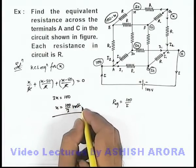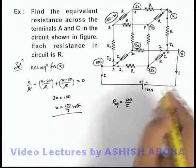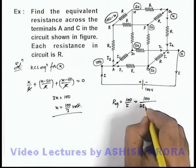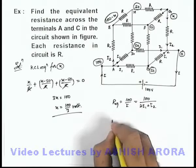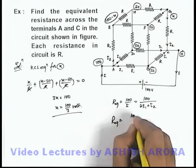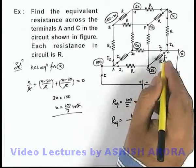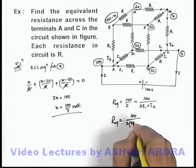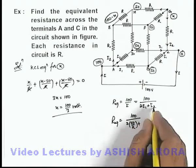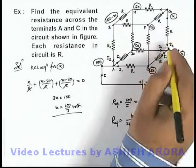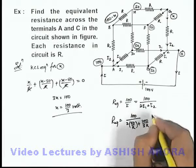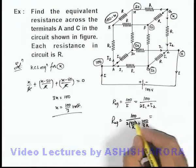Now as we have got the value of x, we can directly find out the total current as 100 divided by total current will be 2 i1 plus i2. And in this situation, here i1 we can write as 50 minus zero by R, so it'll be 2 into 50 by R, plus i2 we can write as x minus zero by R, it is x by R, so this can be written as 100 by 3R.